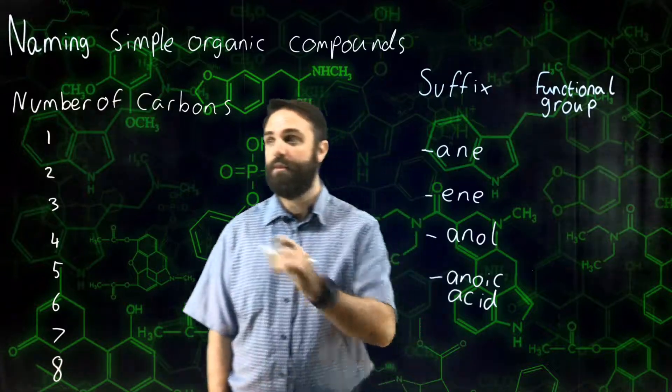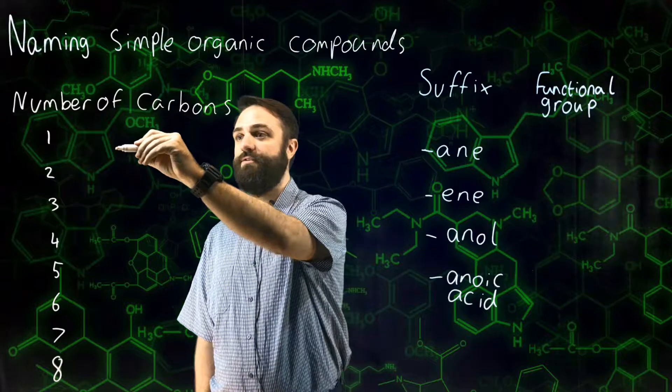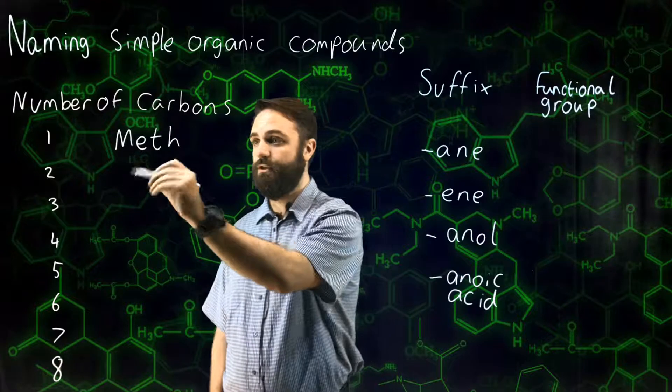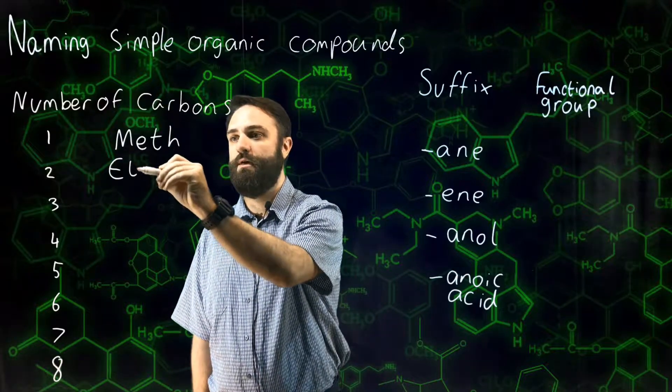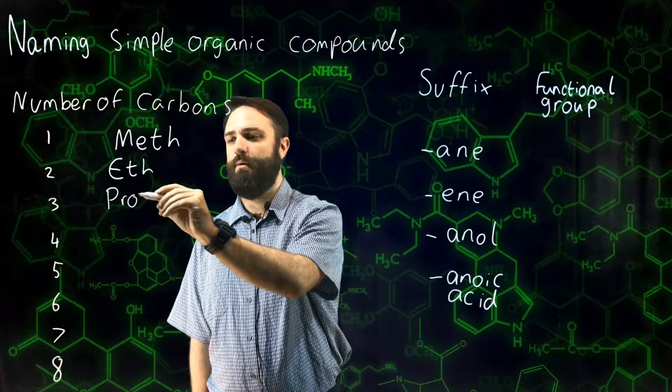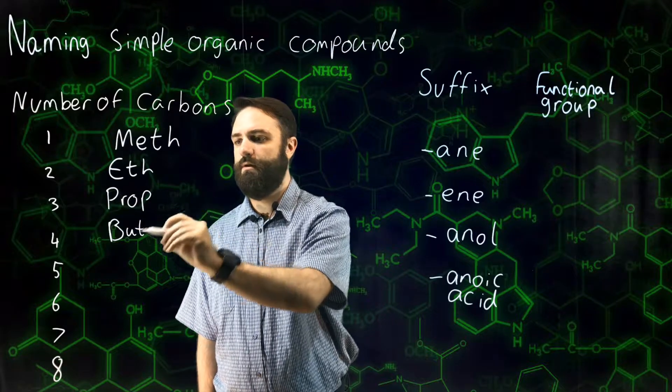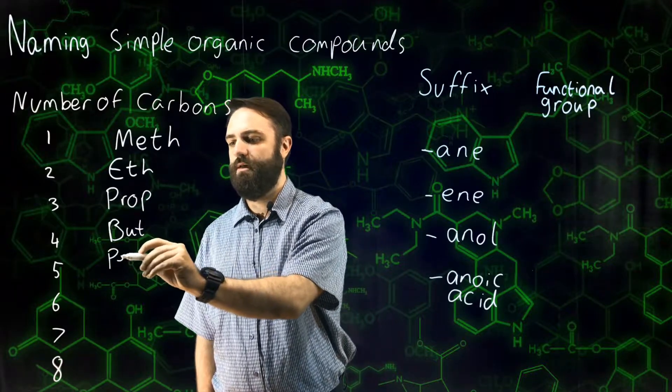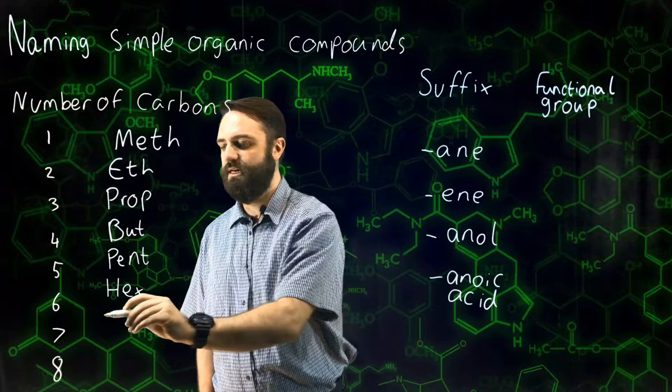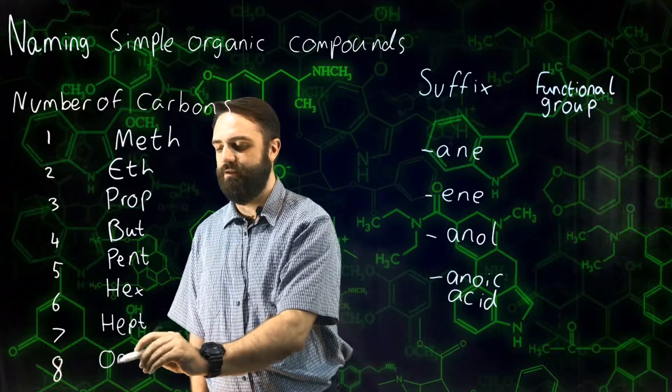And in chemistry, if you have one carbon, your prefix is meth. Two is eth. Three, prop. Four, but. Five is pent. Six is hex. Seven is hept. Eight is oct.